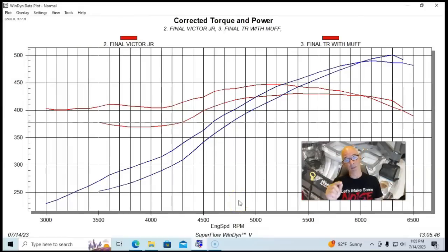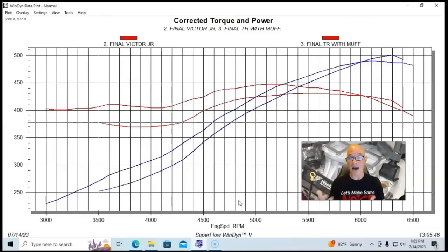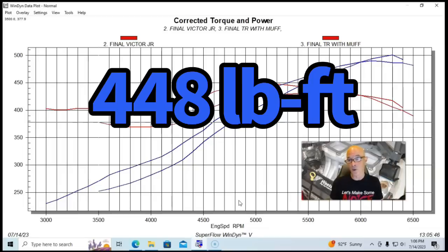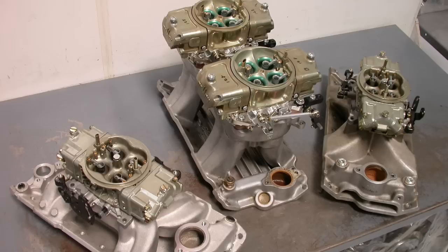The single plane actually made a little bit more peak power. The Edelbrock made 491 foot-pounds—you can see it made a lot more torque than the single plane did. In fact, it made the most torque of either one of the intake manifolds. I'll show you a comparison to the RPM Air Gap too. It made 448 foot-pounds and 491 horsepower. Now I've never seen the Tunnel Ram not make more power than the single plane in all my testing, but this is what we see here.